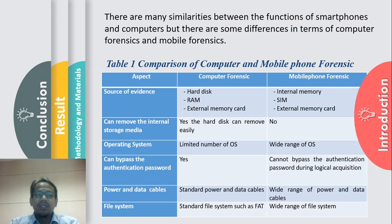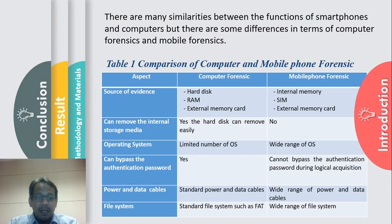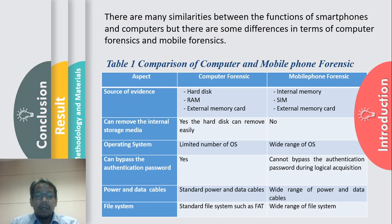There are many aspects such as source of evidence. For computers, there is a hard drive, RAM, and external memory card. For mobile phone forensics, there is internal memory or SIM card and external memory card. For internal storage media, computer forensics storage can be removed, but for mobile forensics it cannot. For the operating system, computer forensics has a limited number of operating systems, while mobile phone forensics has a wide range. For bypassing the authentication password, computer forensics can be done, but for mobile phones you cannot bypass the authentication password during logical acquisition. For power and data cables, computer forensics uses standard power and data cables, while mobile forensics requires a wide range of power and many data cables.